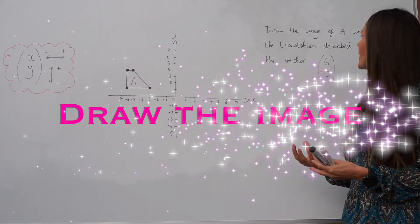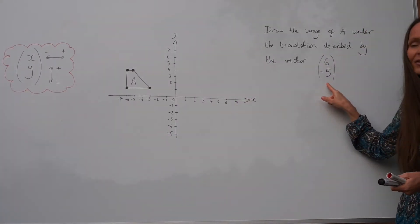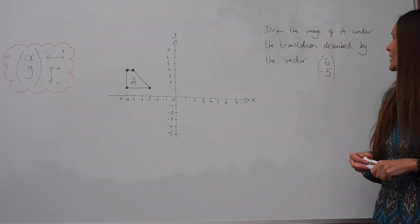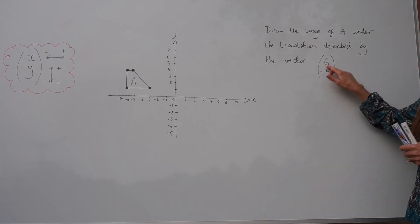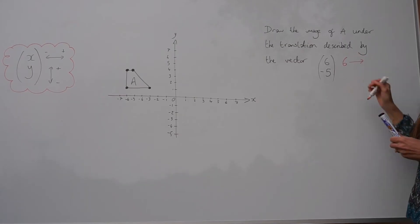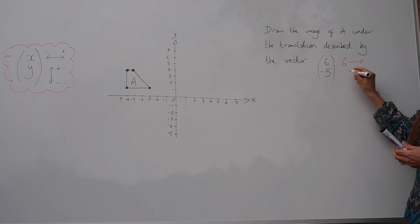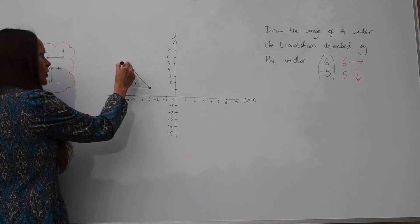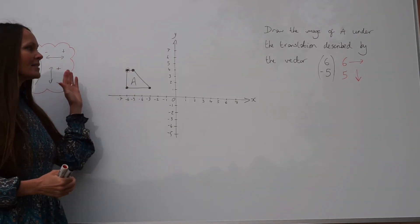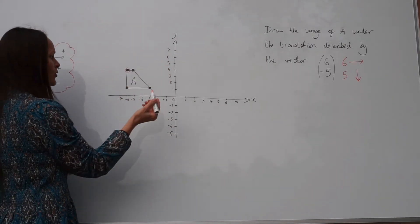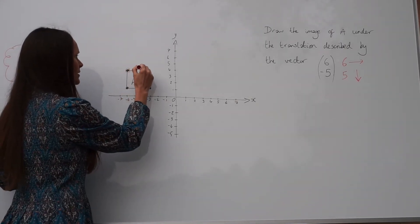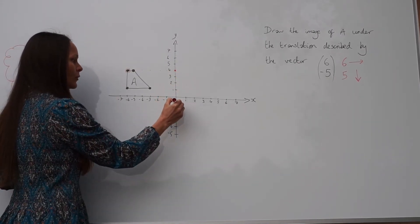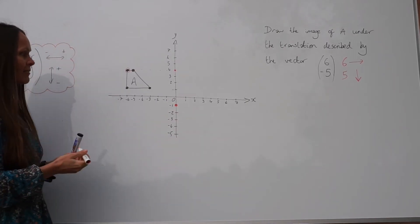In the next example it says 'draw the image of A under the translation described by the vector (6, −5).' The top number is positive six, so we move six units to the right. The bottom is negative five, so we move five units down. Choose a point on shape A — I'll choose the top-left point of the trapezium. Count six units to the right and five units down, ending up at coordinate (0, −1). That's where the top-left corner of the new trapezium will be.